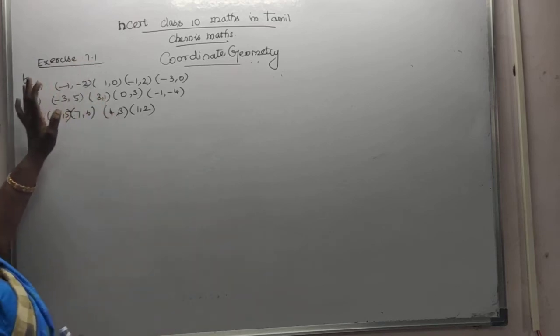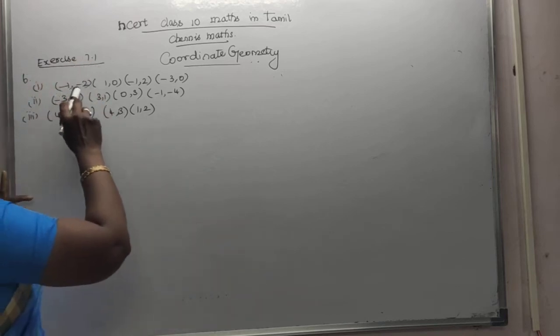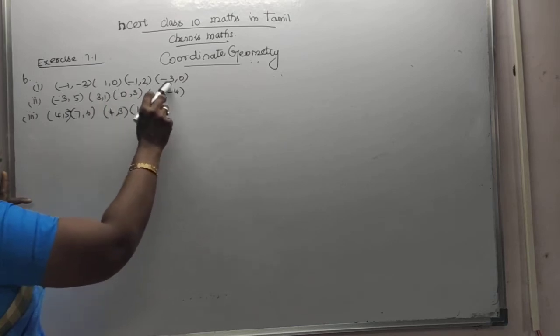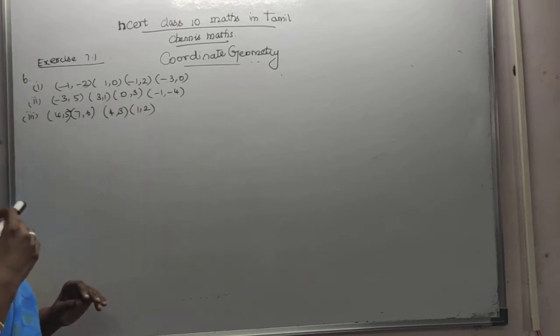Exercise 7.1, the sixth question. Now, what type of quadrilateral do all these points form? Now, let's look at this.